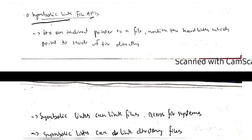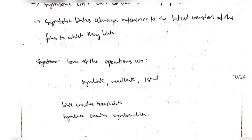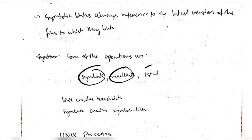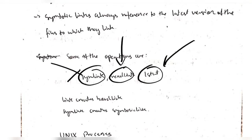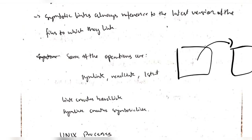Next we have the symbolic link file APIs - it's an indirect pointer, not a direct pointer. It's used mainly for directory files and always refers to the latest version of the file to which the link points. Some operations we can perform are: 'symlink' to create the link, 'readlink' to read the link, and 'lstat' to show the status. These are accessed indirectly - the address is not specified but based on where you are, the next file is accessed. The difference between hard link and symbolic link is very important from an exam point of view.